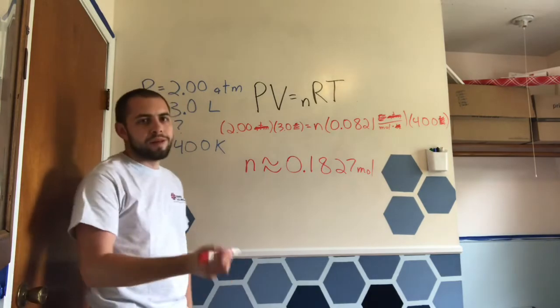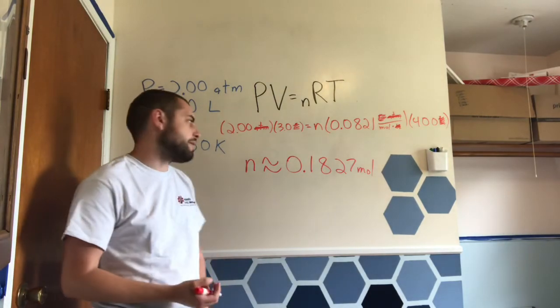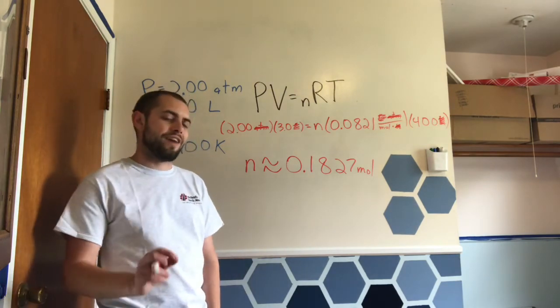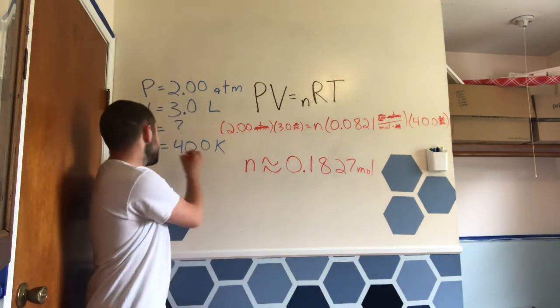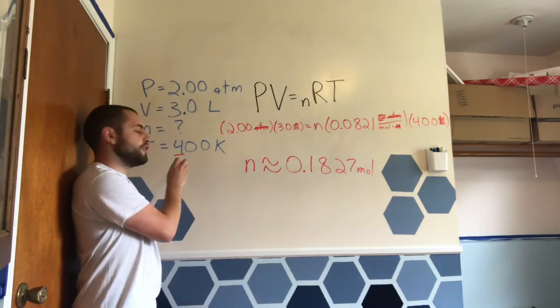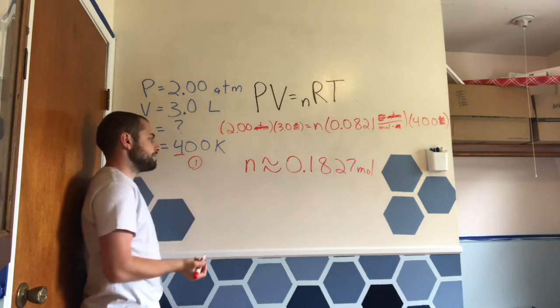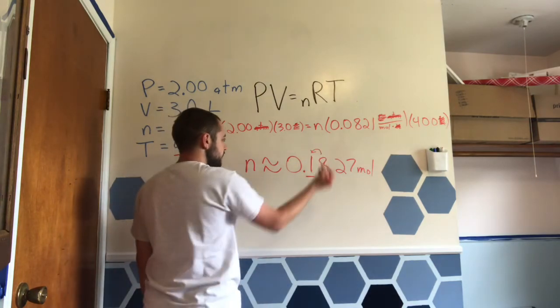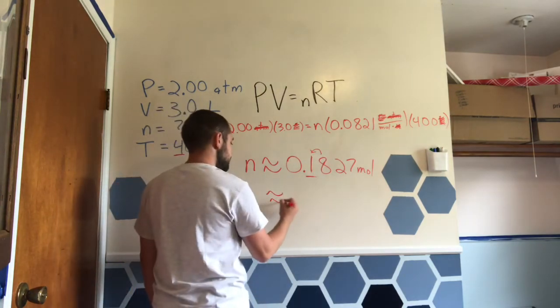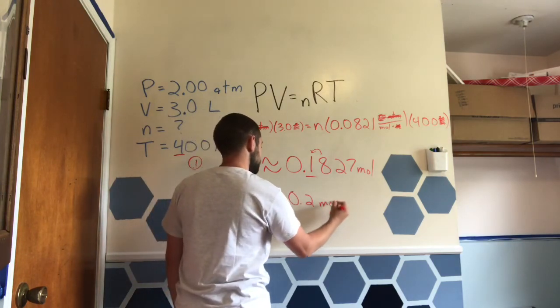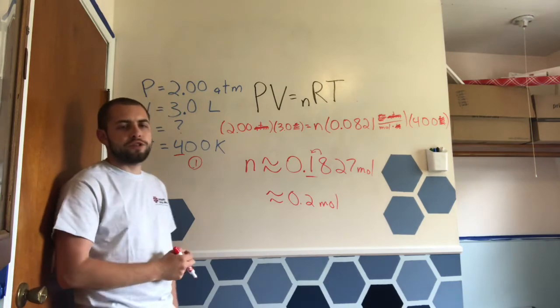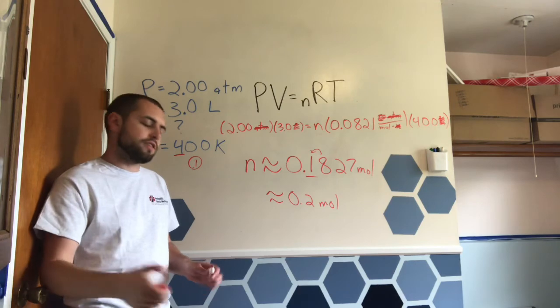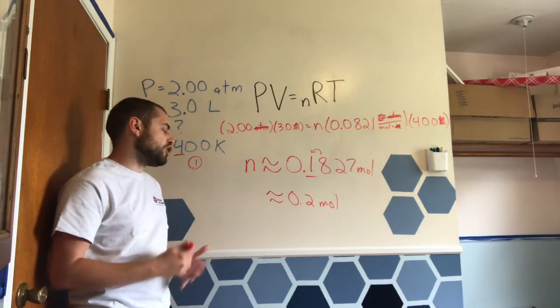So how many particles of gas did we have in this sample? About 0.18 moles. If I was doing significant figures, I would base it off of this value right here, which only has one significant figure. I would only keep one, and I would use the next number to round up. So this is really about 0.2 moles. 0.2 moles. That's still billions of billions of particles of gas. But it's not a huge amount. 0.2 moles.